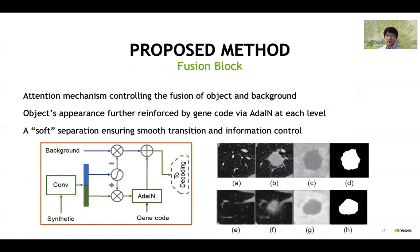We followed our baseline methods to use a fusion block to control the separation of object and background, instead of our previous in-painting approach, which essentially removes part of the image. The benefit of doing this is that we can achieve a more realistic transition in the final synthesis of the image. And more importantly, such a model enables the gene code to focus on the appearance of the foreground, and also impacts the fuzzy transition zone between the lesion and surrounding tissues, which better reflects the biological reality. Such fusion is guided by the output of the lesion mask.